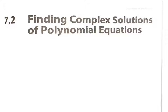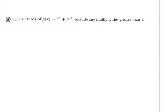Finding complex solutions of polynomial equations — lots of different examples in this lesson. Your directions say find all zeros of functions including multiplicities. Multiplicities means if answers occur more than one time, it's called multiplicity — multiplicity one, multiplicity two, or three.